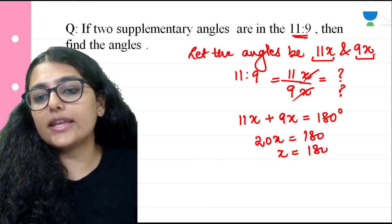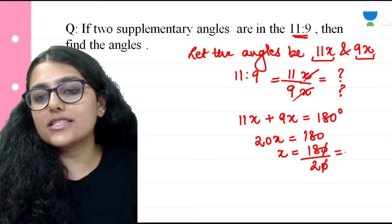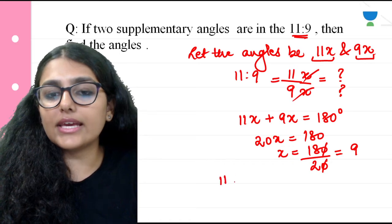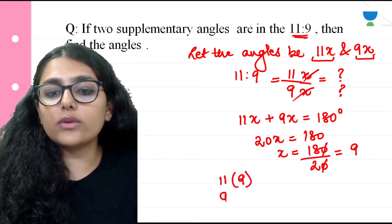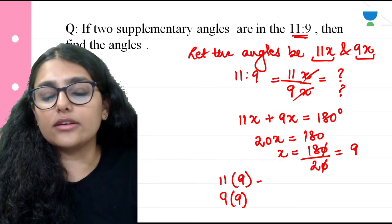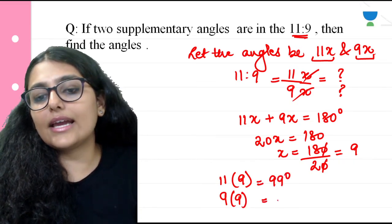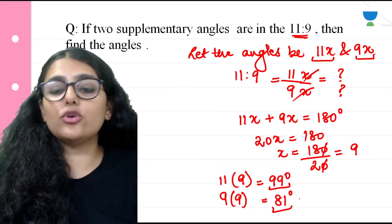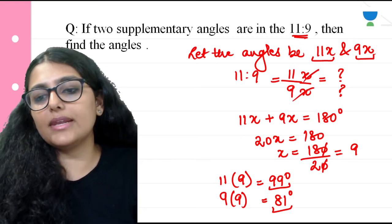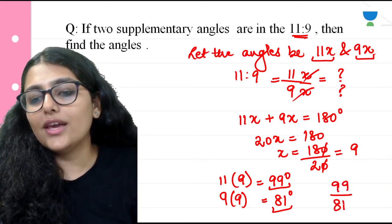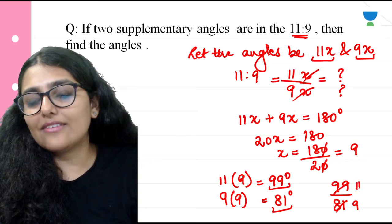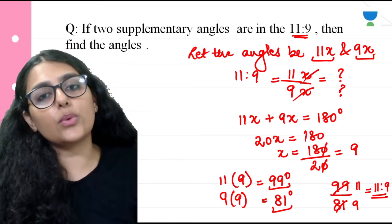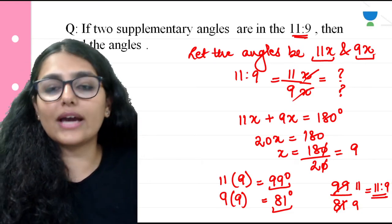So 20x equals 180, therefore x equals 180 divided by 20, which equals 9. The two angles are 11 into 9 equals 99 degrees, and 9 into 9 equals 81 degrees. To verify: 99 upon 81 in lowest form gives 11:9, confirming the ratio. This is how we find supplementary angles in this type of question.